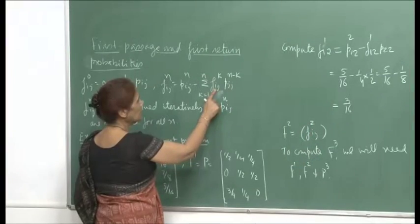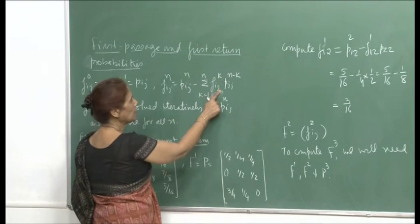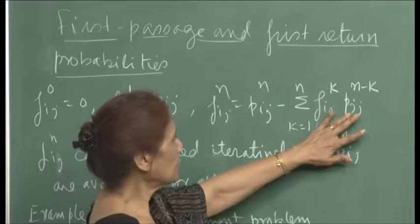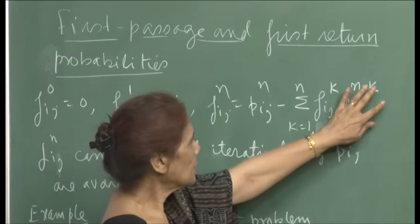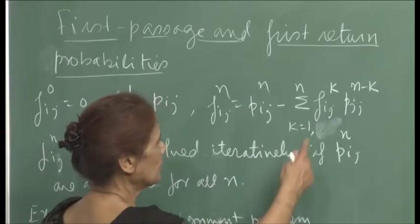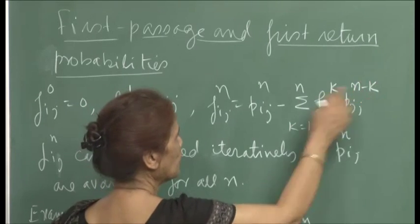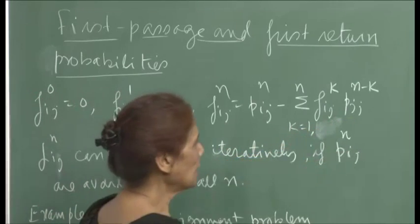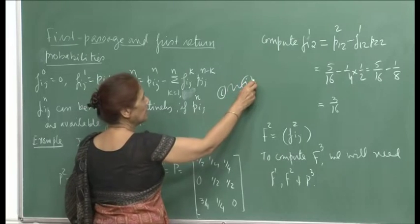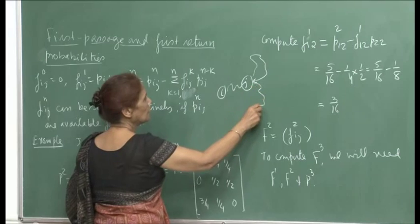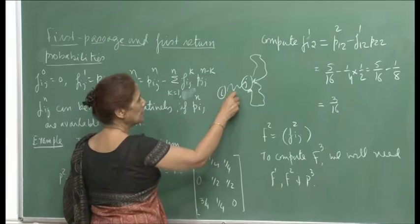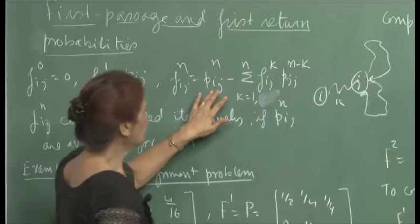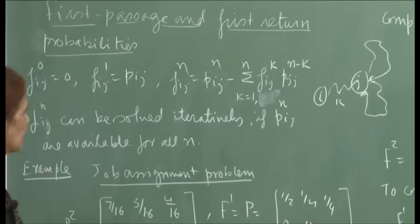We subtract those probabilities from p_ij(n) to compute f_ij(n). The formula says: in k steps you transition from i to j for the first time, and then from j to j in n minus k steps. This p_jj(n minus k) can include visiting j any number of times in between. So we subtract all such paths — from i to j for the first time in k steps, then n minus k more steps — to compute the first passage probabilities.